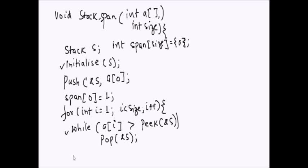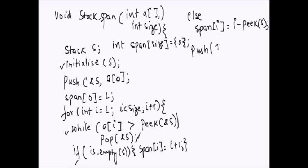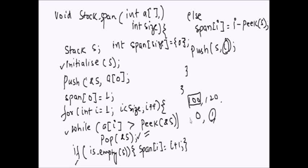When we exit the pop loop, if the stack is empty, span[i] = i + 1. If the stack is not empty, span[i] = i minus peek(stack), where peek gives the index of the day whose price is greater than today's. Then push the current index onto the stack. Note: we store the index of the day on the stack, not the actual price.